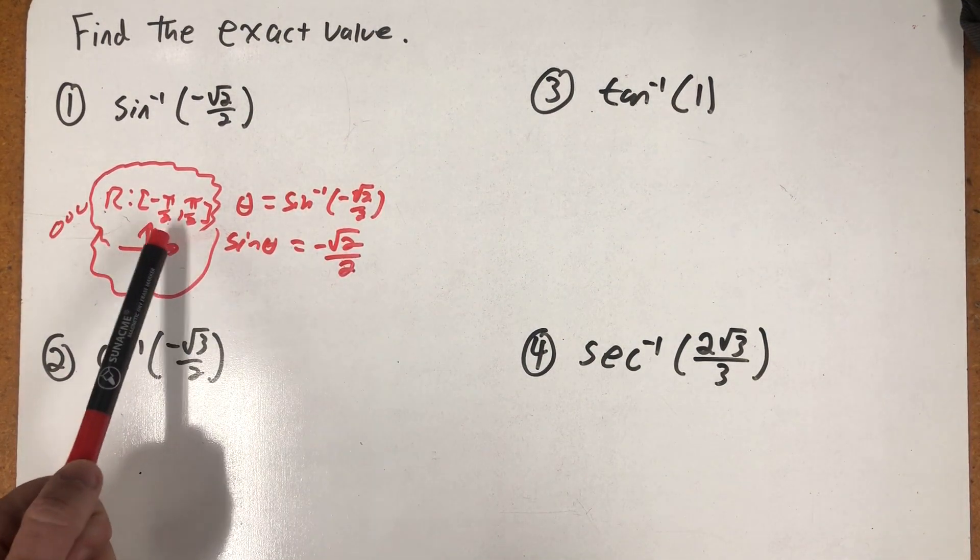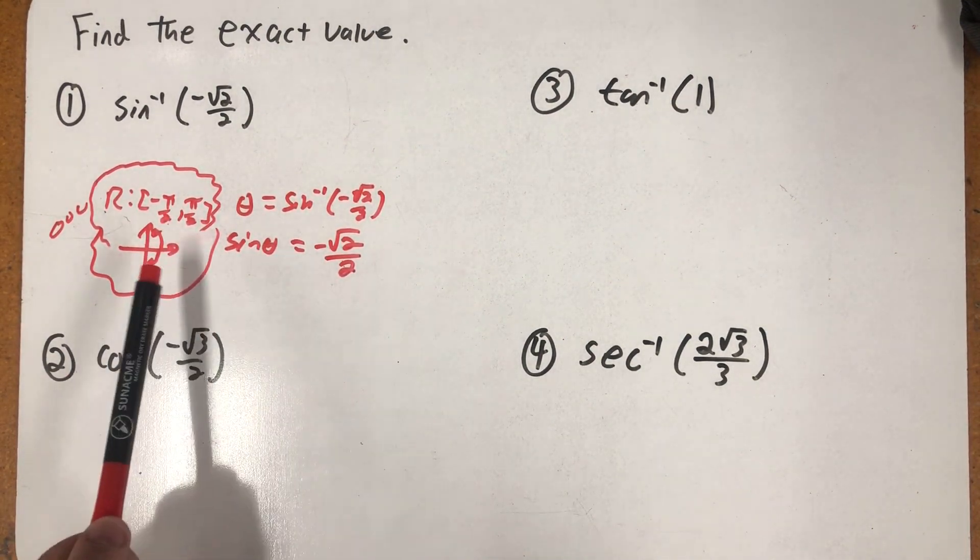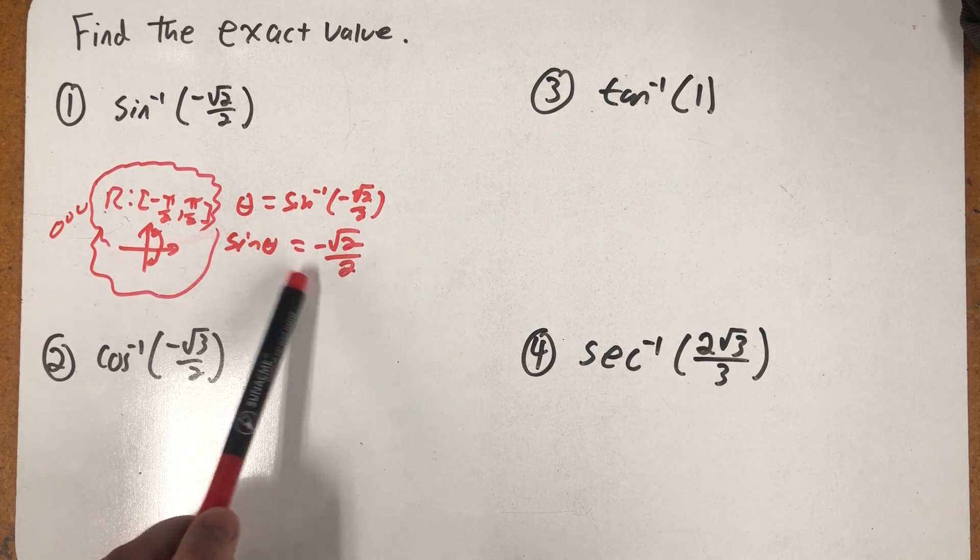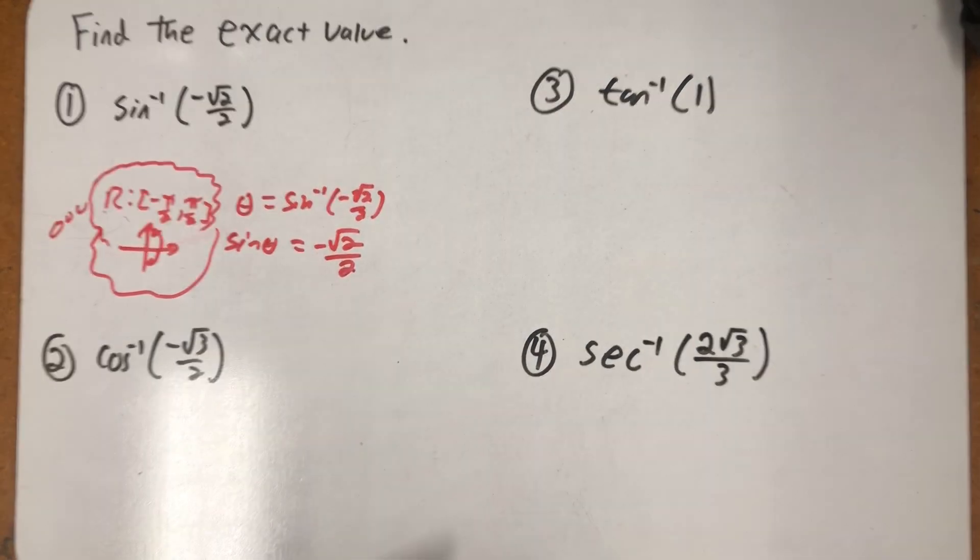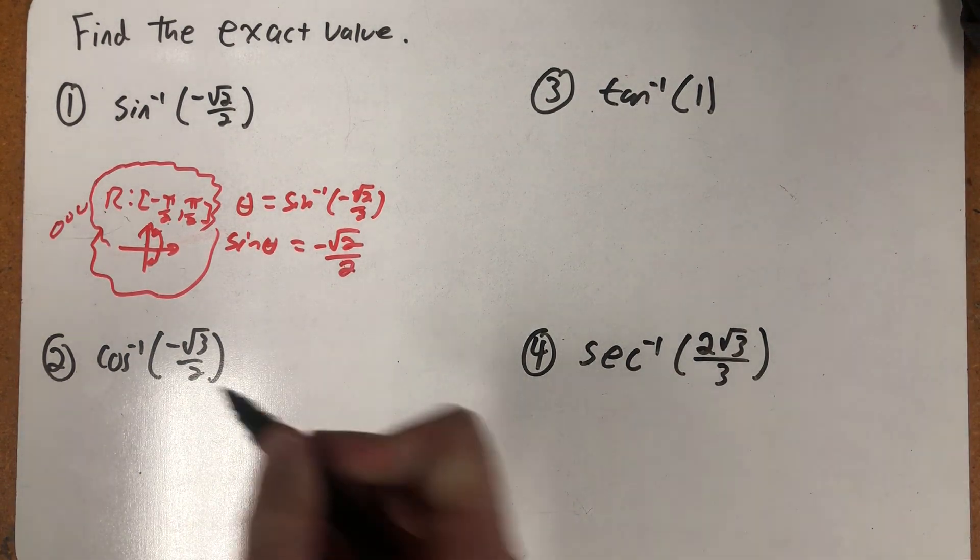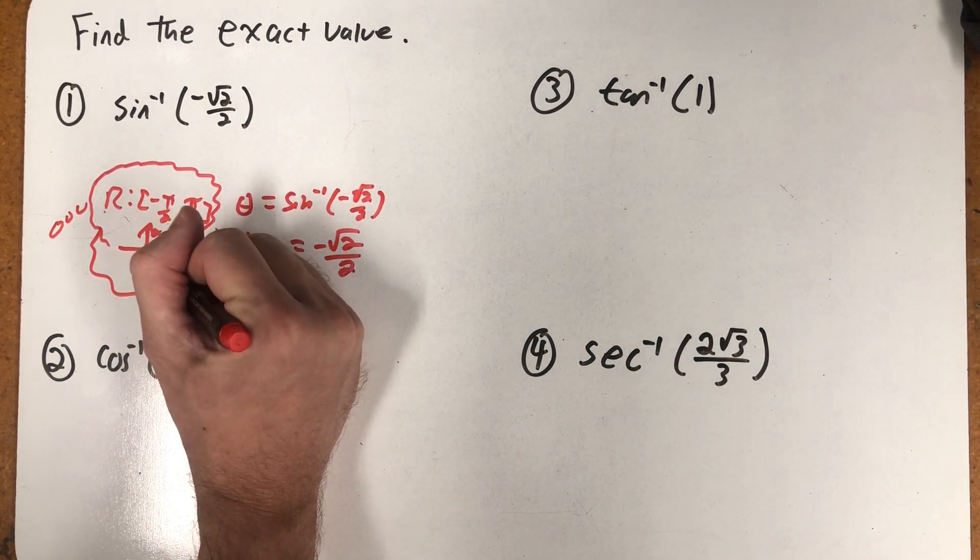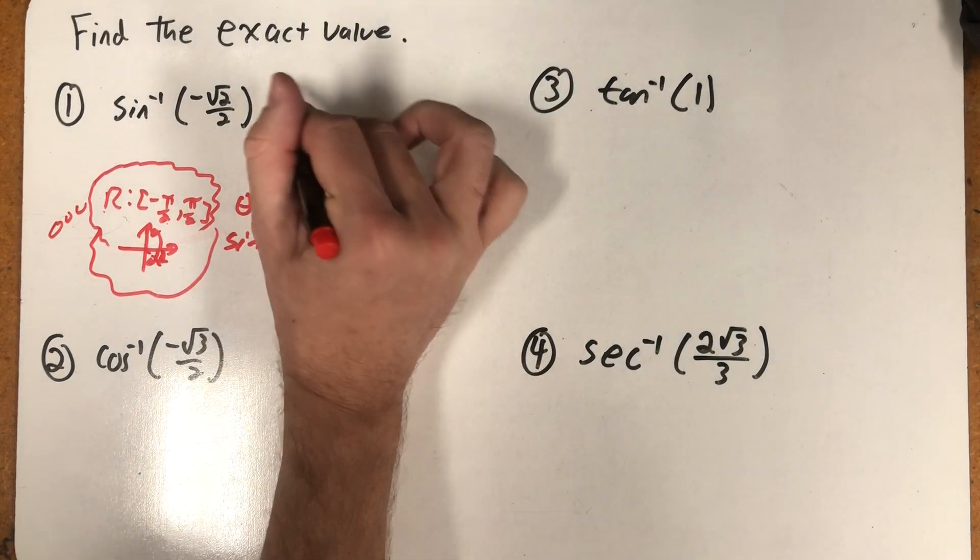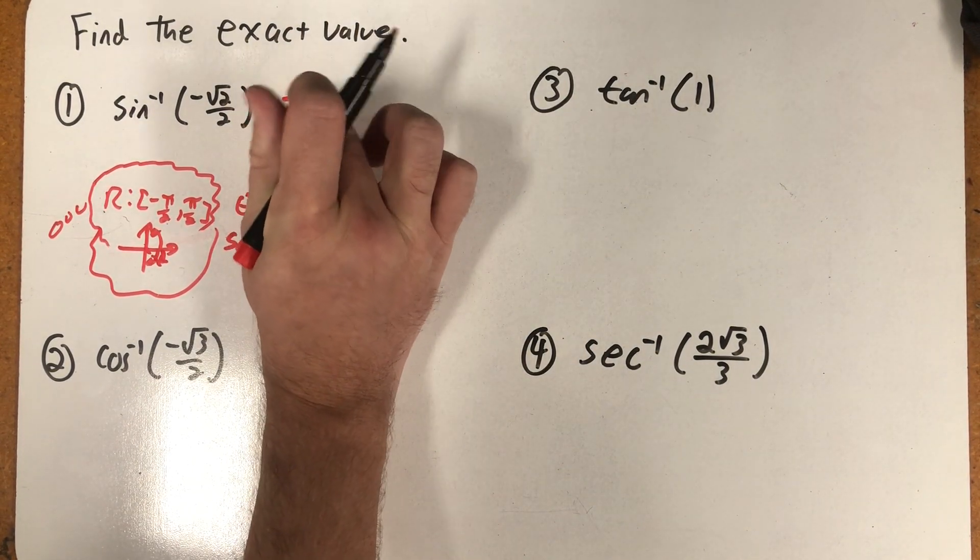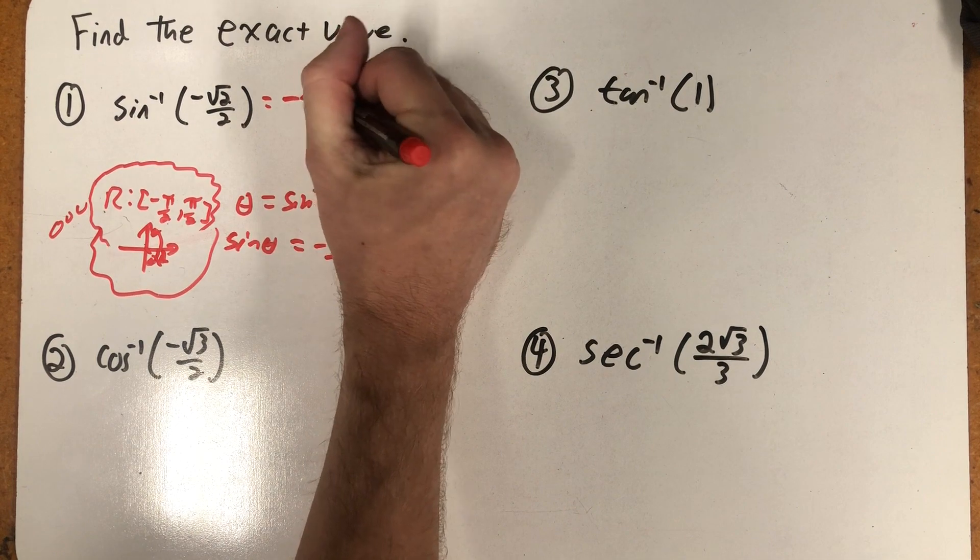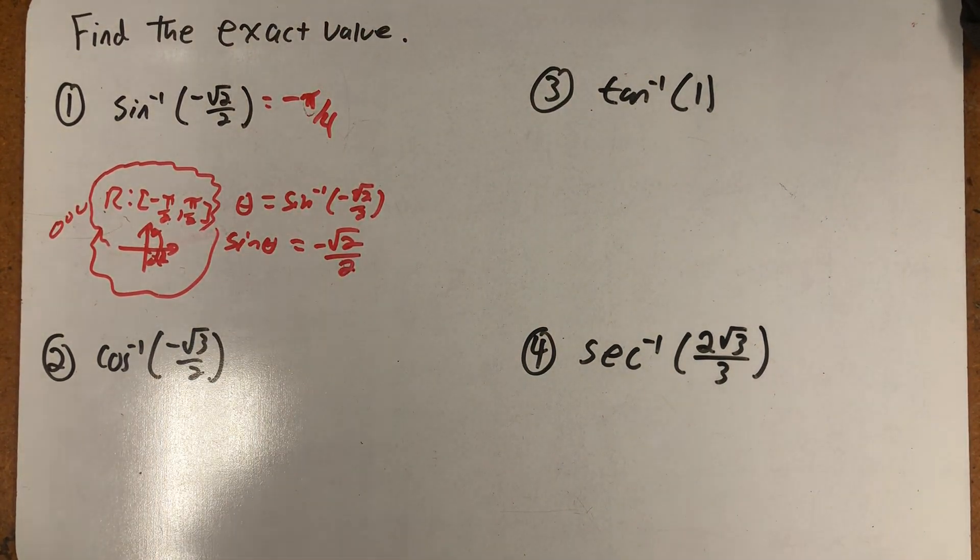If I'm only picking between quadrants one and four, sine's negative only in quadrant four. So I need one of those angles down there, a negative angle. And I now know that this has to be minus pi fourths, just thinking about those unit circle values or my special right triangle values.